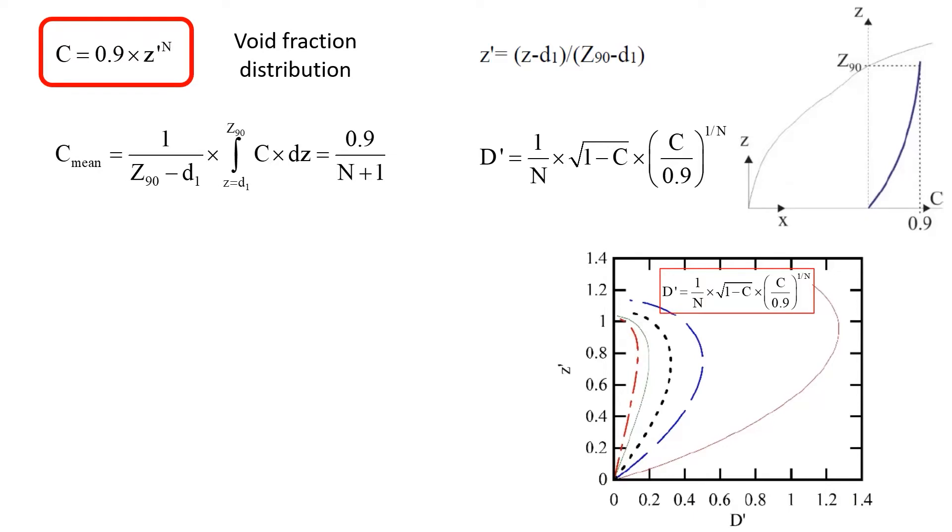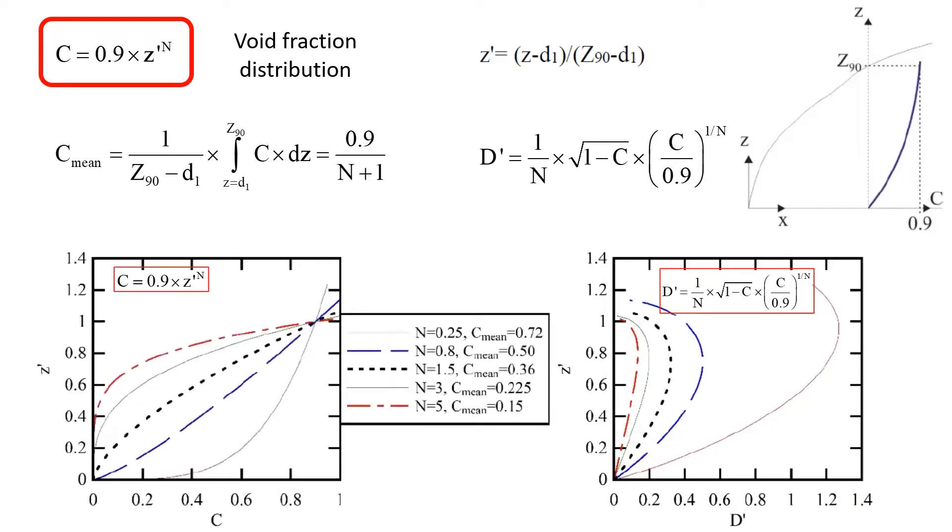Here's an example of the analytical solutions for different values of n and in turn different depth average void fraction in the roller.